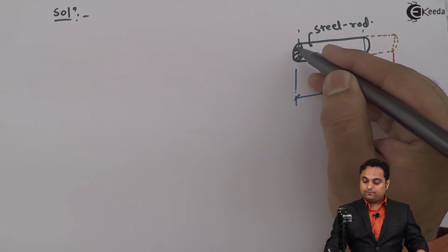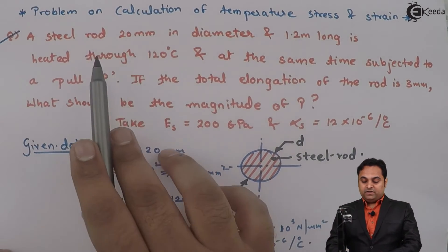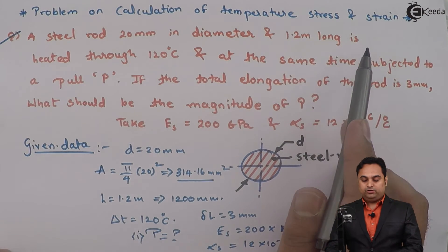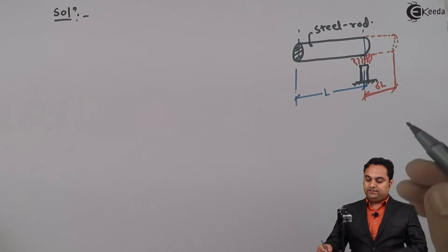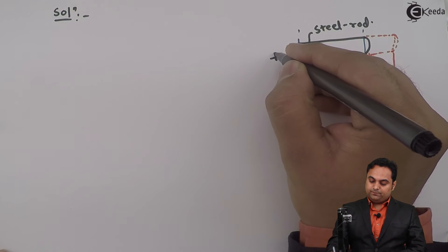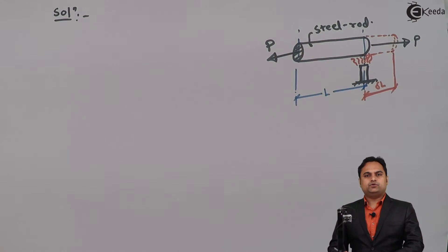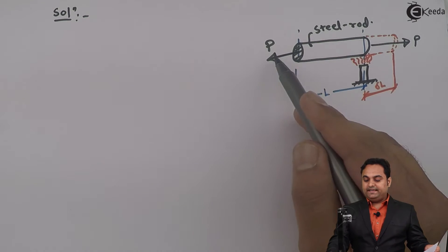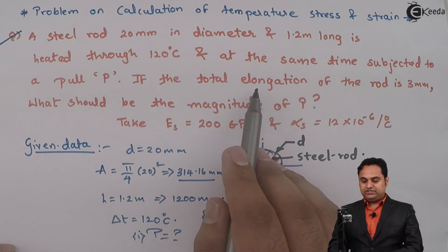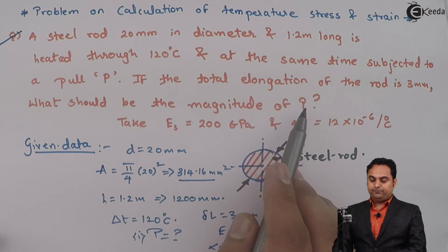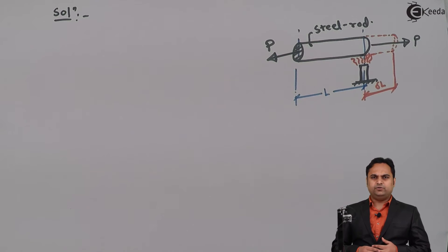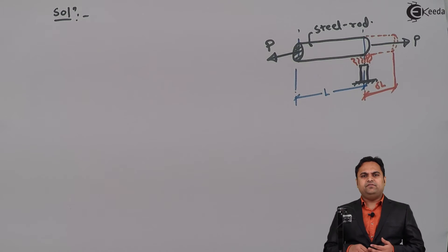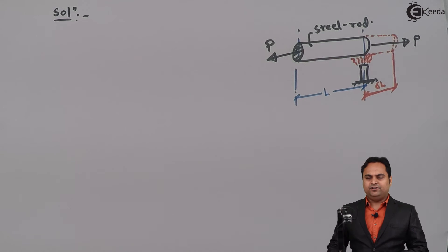The steel rod is 20 mm in diameter and 1.2 meters long, heated through 120°C and at the same time subjected to a pull P. So the rod is heated and pulled simultaneously, resulting in a total elongation of 3 mm. Our approach: first find elongation due to load, then due to heating, add both to get total elongation, and solve for P.